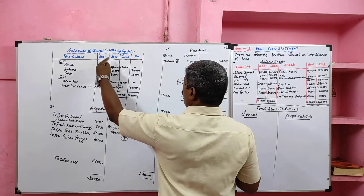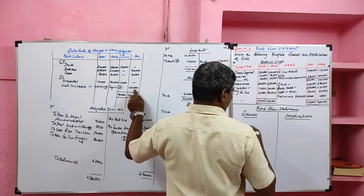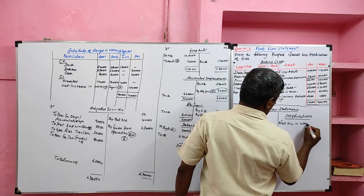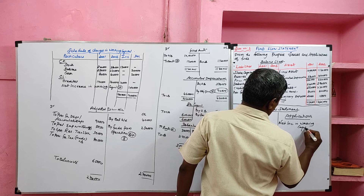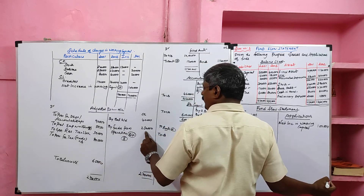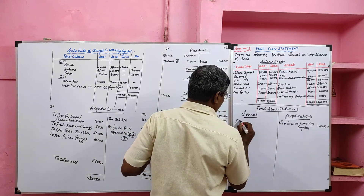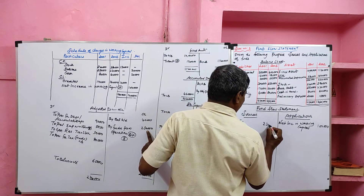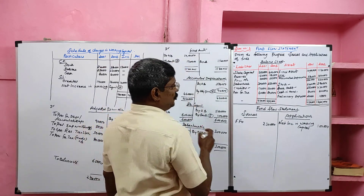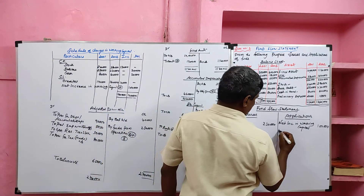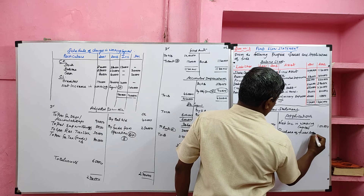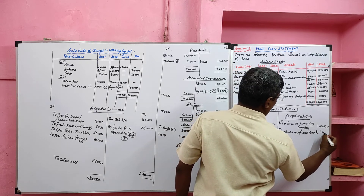We prepared the schedule of changes in working capital - the outcome is net increase. Net increase in working capital goes to the application side: 1 lakh. Funds from operation is a source: 2 lakh 30,000. From the fixed asset ledger account, the debit side balance is considered as purchase of fixed assets: 1 lakh 20,000.